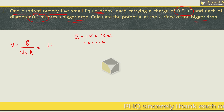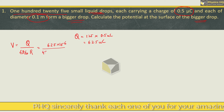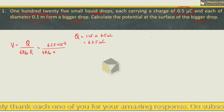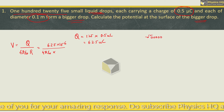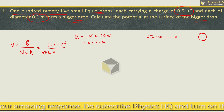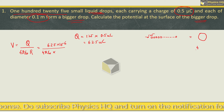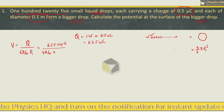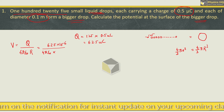So we got Q equal to 62.5 micro coulomb, which is 62.5 into 10 raised to minus 6, divided by 4 pi epsilon naught into the radius. Now please understand: these small drops, there were 125 of them, and then there is this big drop. Both volumes are the same. So the big drop's volume is 4 by 3 pi R cube, and a single small drop's volume is 4 by 3 pi r cube.